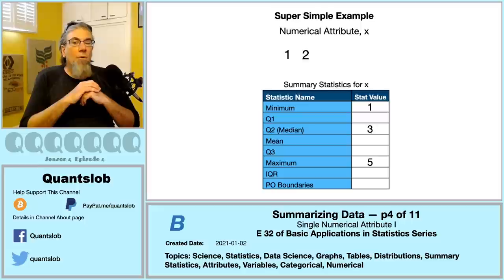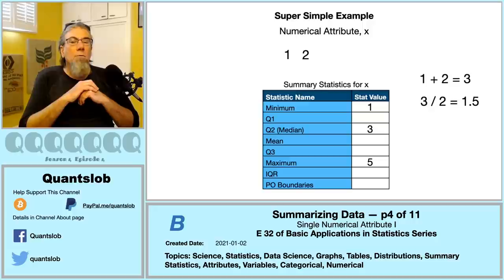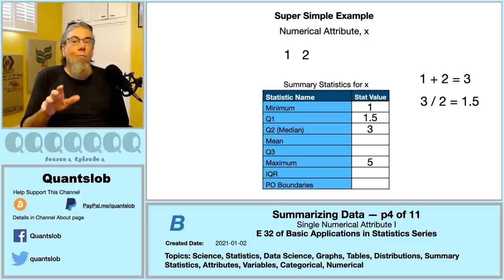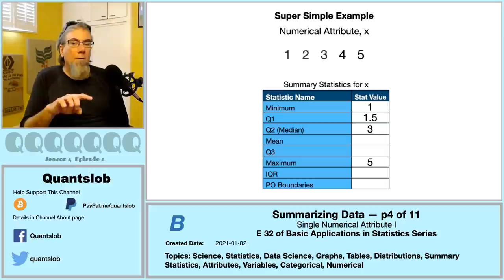We have an even number of values — two of them: 1 and 2. To find the median of an even number of ordered values, we take the average of the two centermost values. So Q1 = (1 + 2) / 2 = 1.5. Calculating Q3 is done the same way but working with the larger numbers to the right of the median — the median of those numbers is Q3 = 4.5.